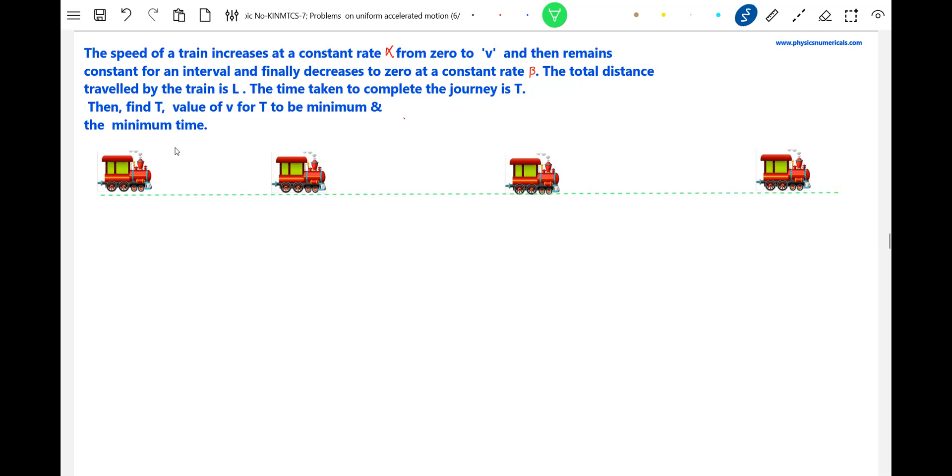Okay, so it will start from rest. Look at the data. All the given t equals zero, it is at rest. So first it will acquire velocity v. This will be accelerated motion, so here alpha, accelerated motion. Speed will increase, uniform speed, then it undergoes retardation here.